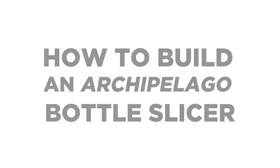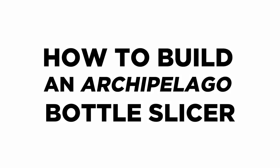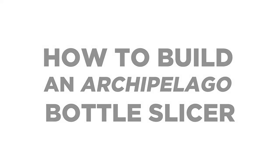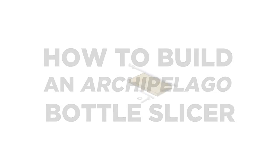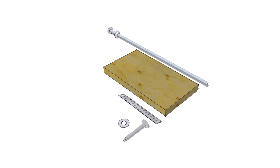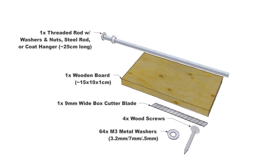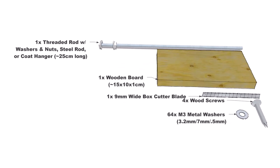For the specialized tools, you'll need to begin by building a bottle slicer. There are many different designs for bottle cutters and slicers, but the cheapest and easiest that I've found consists of a handful of steel washers or coins with holes drilled in the center.